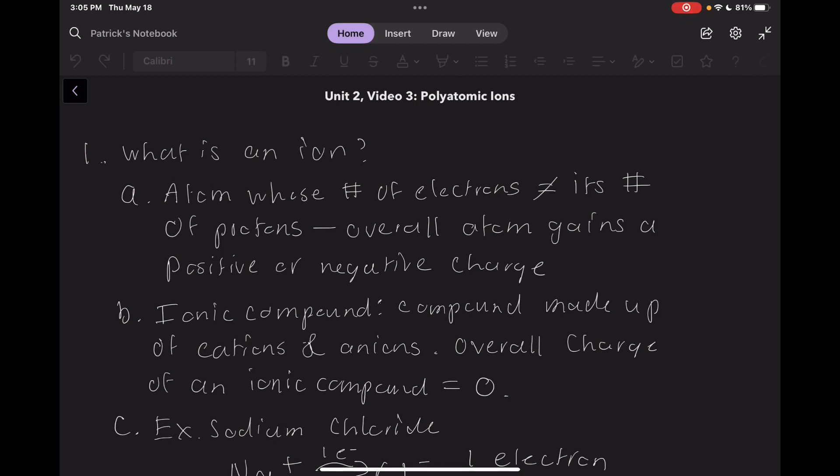Now, the concept of polyatomic ions themselves isn't too hard to understand. We already know that an ion is essentially an atom whose number of electrons is not equal to its number of protons. As a result of this, the overall atom gains either a positive or negative charge and becomes an ion.